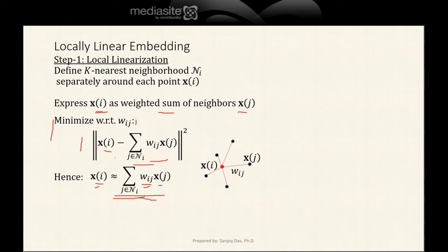This schematic shows the Xi, which is the red point, being equal to the weighted sum of the Xj, which are its neighbors.